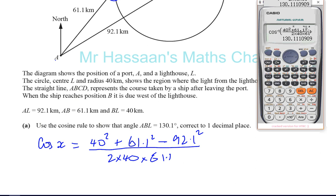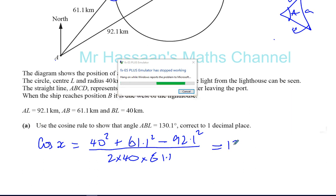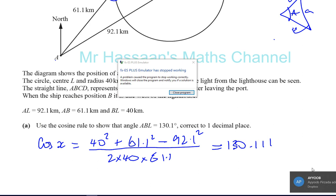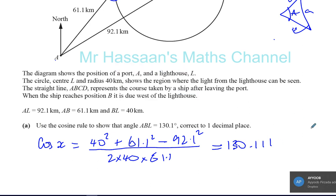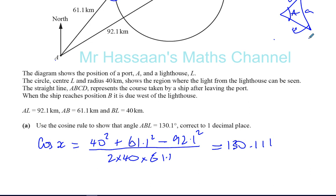And we see we've got the right answer. But the best thing to do is to write it down to a few more decimal places first. So you've got 130.111. And when you round that to one decimal place, it gives you 130.1 degrees. And that is what we had to show.